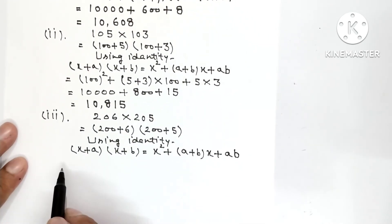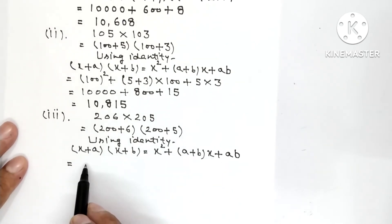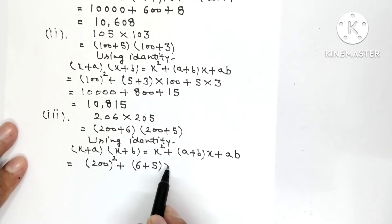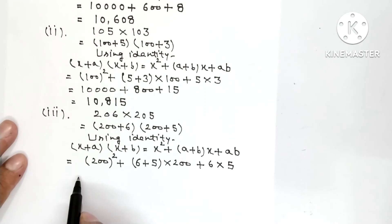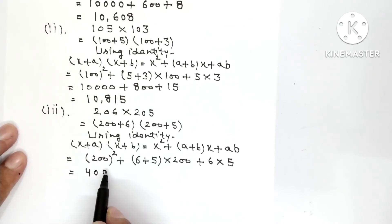So x value 200, a value 6, b value 5. So this will be 200 whole square plus 6 plus 5 in the bracket multiplied 200, plus 6 multiplied 5.